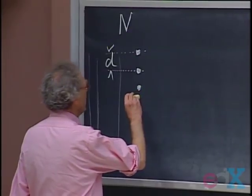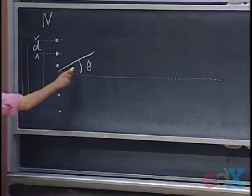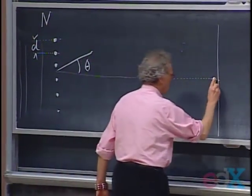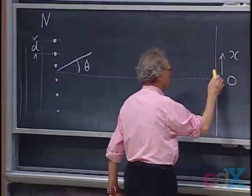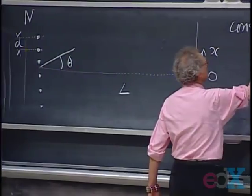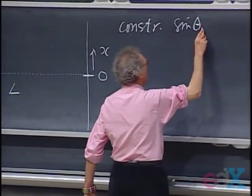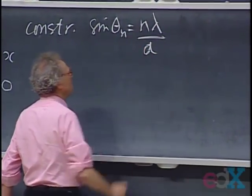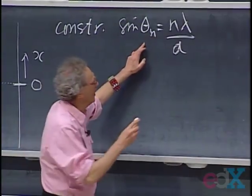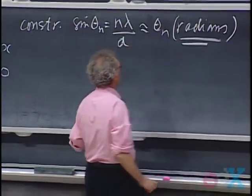We can ask ourselves the same question: looking at a long distance at certain angles theta, where will we see maxima and where will we see minima? We can put a screen at distance L, call this X equals zero, and ask where exactly on that screen we will see these maxima. You will have constructive interference — the same as with double-slit — when sine of theta of N equals N lambda divided by D. For small angles, sine of an angle equals the angle itself, provided you work in radians.